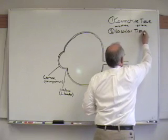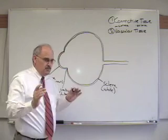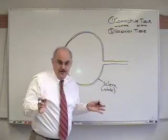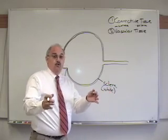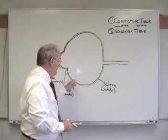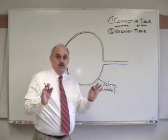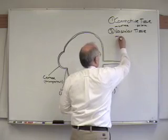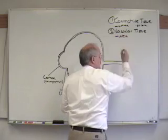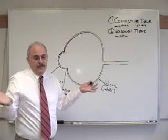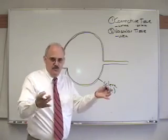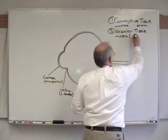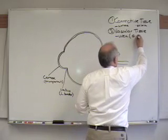And the name of this layer, most people or a lot of people will say the name of that layer is the choroid. Well, that's partly right, because the choroid is part of this layer. It's the part in the back. But it's actually got three components to it. And the name of the vascular layer is the uvea. Some people will call it the uveal tract, but I'm going to call it the uvea. And if you use the term uvea, everyone will know what you're talking about.